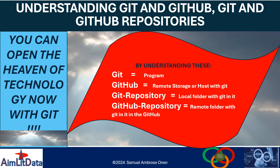Hello, welcome back. We are getting somewhere. This is just a summary of what we have learned so far in understanding Git and GitHub repositories. We have seen the conceptual aspect of Git and GitHub — conceptually, Git is a program and GitHub is a remote storage or host, with Git repositories as a local folder with Git in it, and a GitHub repository as a remote folder with Git in it.